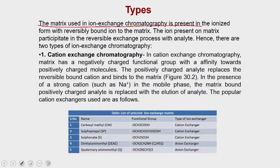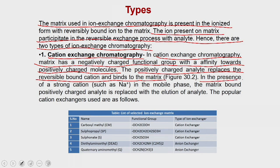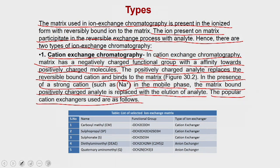The matrix used in ion exchange chromatography is ionized for reversible bound ions. The ions present on the matrix participate in a reversible exchange process. Hence there are two types of ion exchange chromatography. In cation exchange chromatography, the matrix has a negatively charged functional group with affinity towards positively charged molecules. The positively charged analyte replaces the reversibly bound cation and binds to the matrix. In the presence of a strong cation such as sodium in the mobile phase, the matrix-bound positively charged analyte is replaced, causing elution. Popular cation exchangers include carboxymethyl (CH₂COOH), SP Sepharose, and sulfonate.